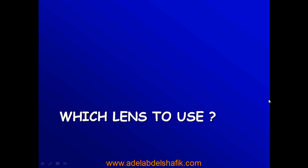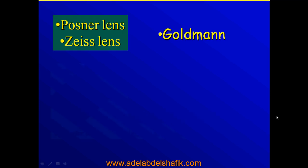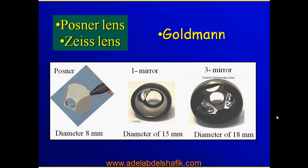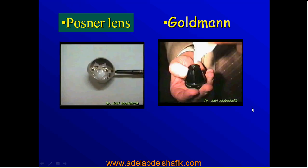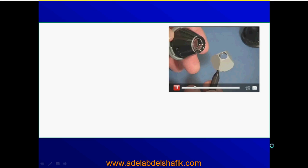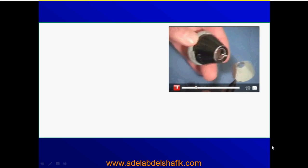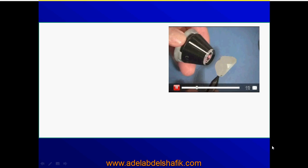Which lens should we use? We have the Goldman 1-mirror and 3-mirror. The Goldman 1-mirror lens has a diameter of 15mm, while the Goldman 3-mirror has a diameter of 18mm. On the other hand, the Posner lens has a diameter of only 8mm. This is the 4-mirror Posner lens and this is the 3-mirror Goldman lens — notice the difference in size: 18mm versus 8mm.